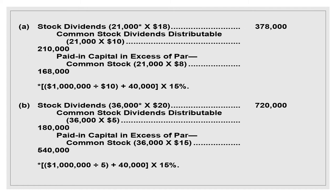In case (b): Common Stock Dividends Distributable is credited at 36,000 shares × $5 par value = $180,000, and Paid-in Capital in Excess of Par is credited $540,000, representing the difference.